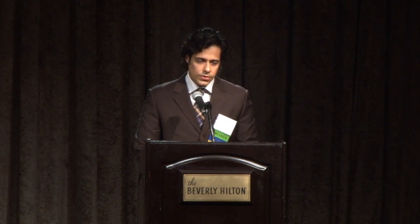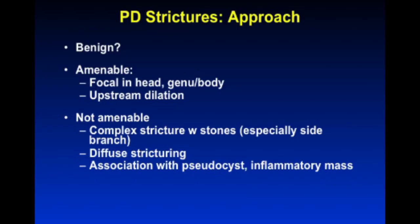For the approach to pancreatic duct strictures, the most important question whenever you see a PD stricture — on MRCP, CT, ERCP, or EUS — is: is it benign? There's a high risk of occult malignancies, both adenocarcinoma and IPMN masquerading as chronic pancreatitis. Amenable strictures are focal in the head or neck with associated upstream dilation. Complex strictures, those associated with high stone burden, side branch strictures, diffuse stricturing of the gland, or other associated complications may not be the best to attack endoscopically.